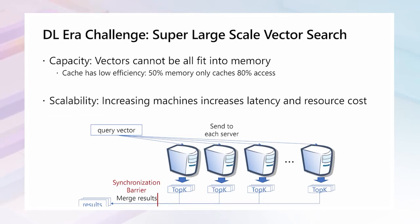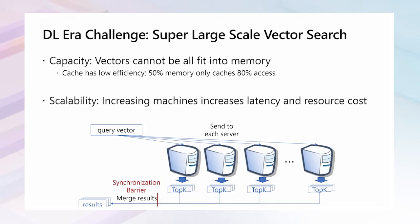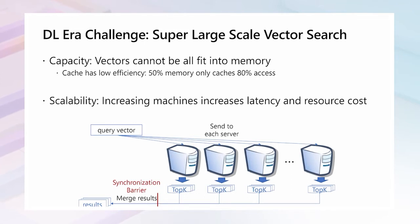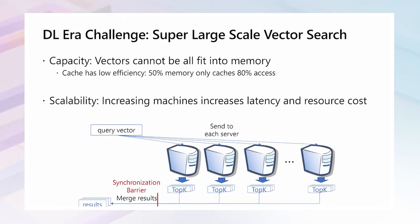There exist two challenges. The first challenge is the capacity issue: vectors cannot all fit into memory, so we need to use SSD to store our vectors and index. Since there is a big gap between memory read and SSD read, one straightforward solution is to use cache. However, we found that cache has low efficiency — 50% of memory can only cache about 80% of accesses. Therefore, how to better leverage memory and SSD is a challenge for ANN algorithm design.